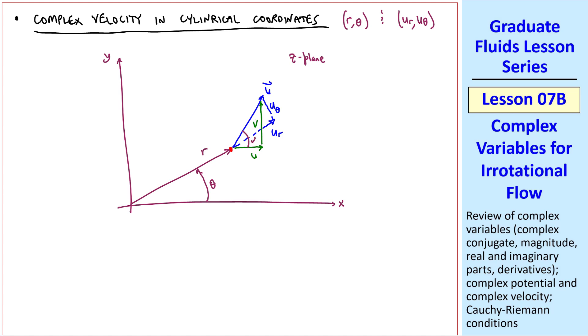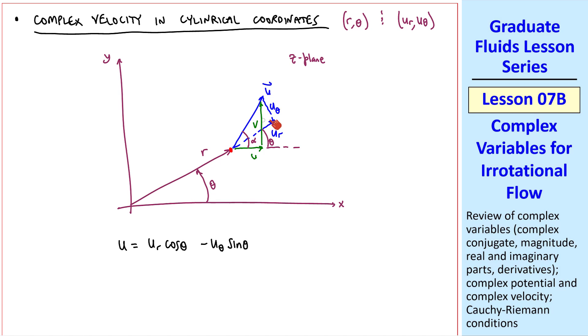Recall this angle is called alpha, and this angle is called theta, the same as here. We can write u equal ur cosine theta, this part here, minus u theta sine theta, this little part here. And similarly, v equal ur sine theta plus u theta cosine theta.